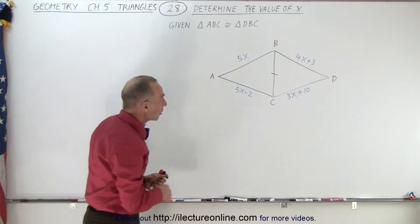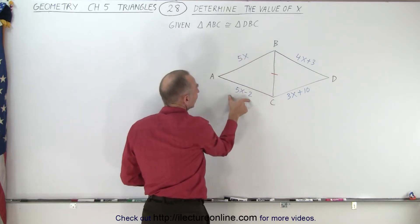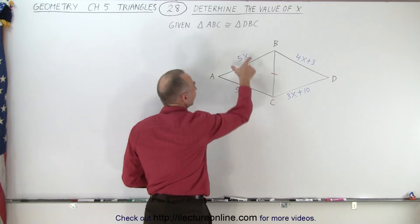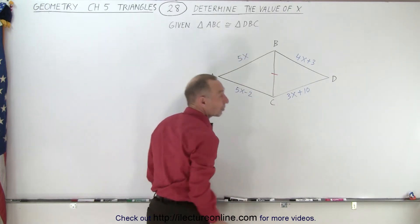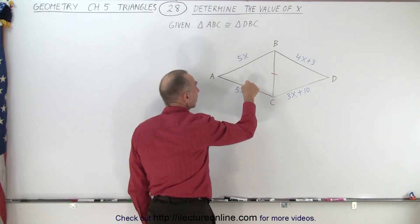But now the question is, does this side have the same length as this? Well, that cannot be, if x has the same value, 5x cannot equal 5x minus 2. So we can see that the length of this side is not equal to the length of this side.